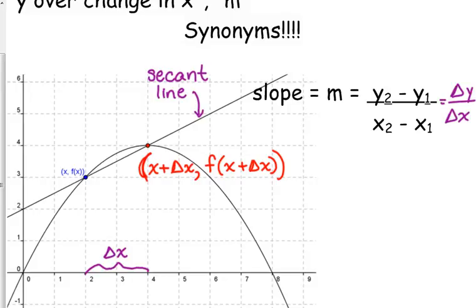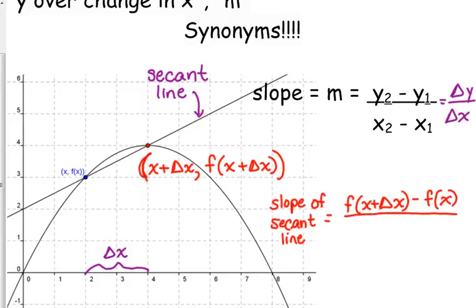So, we could calculate the slope of this secant line using this formula, f of x plus delta x, the second y-coordinate minus the first y-coordinate over the change in my x-coordinates, which is just delta x.